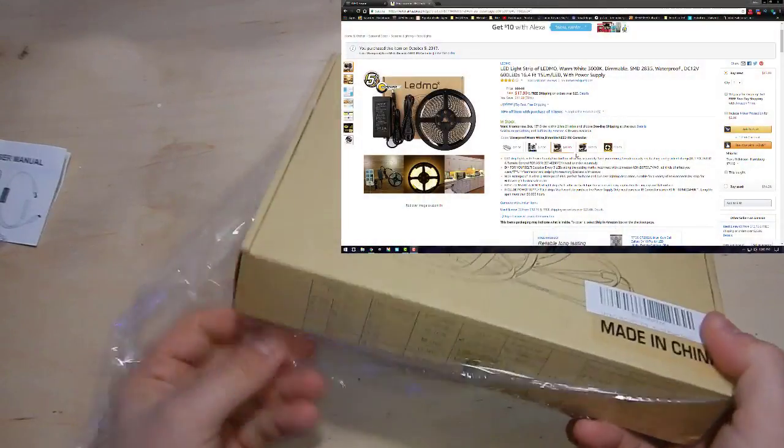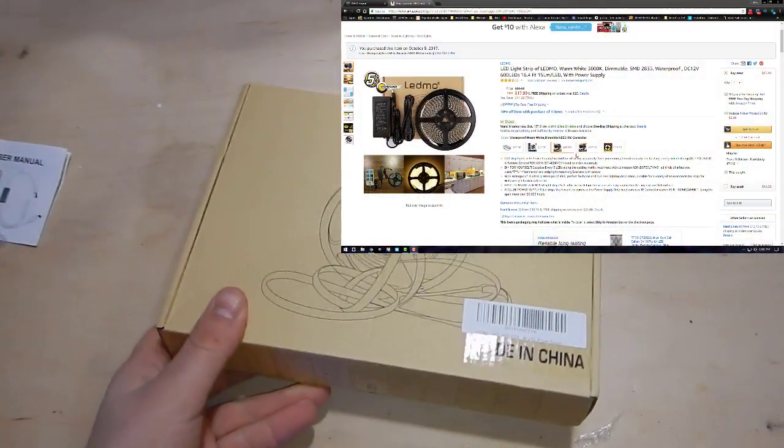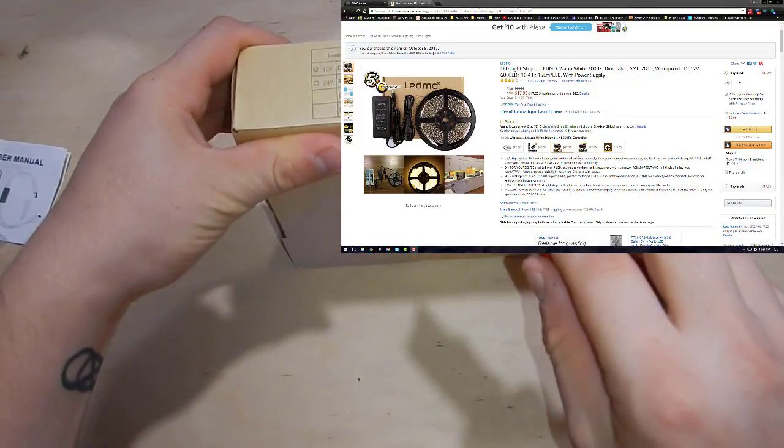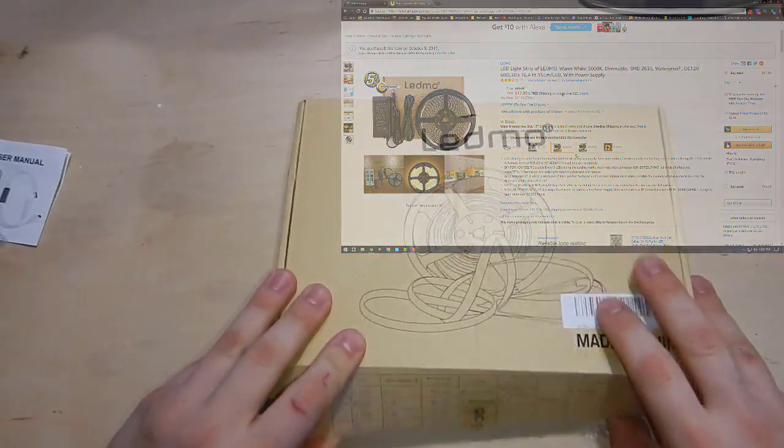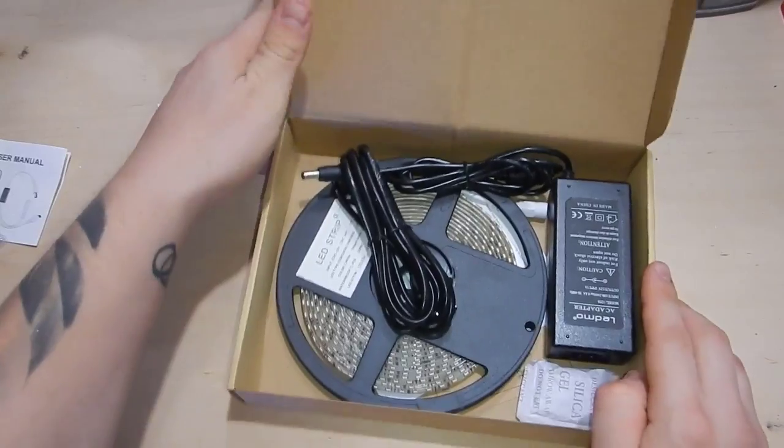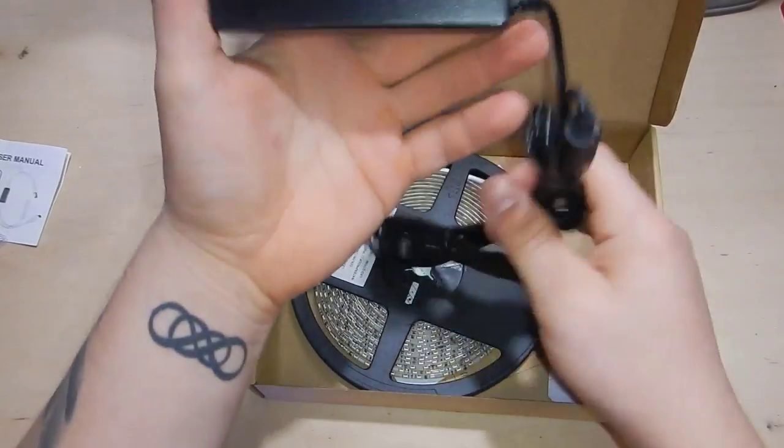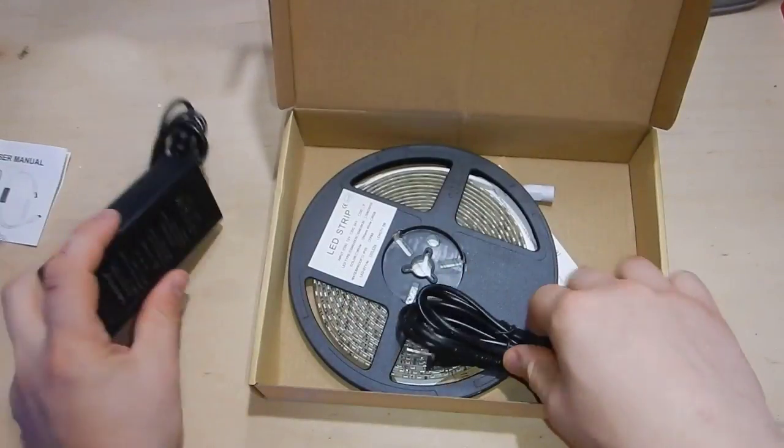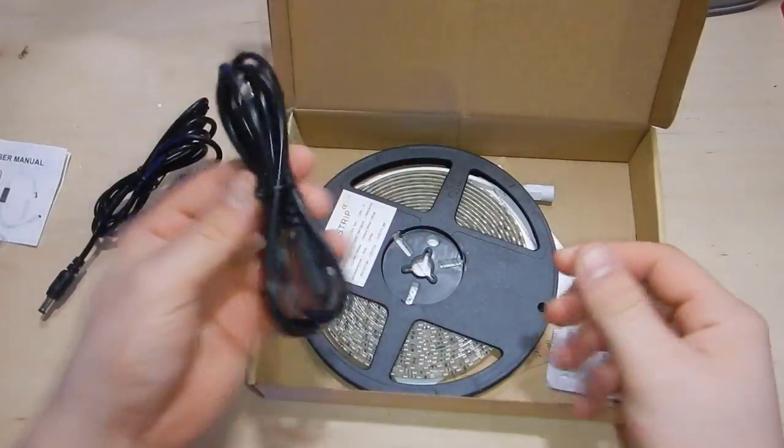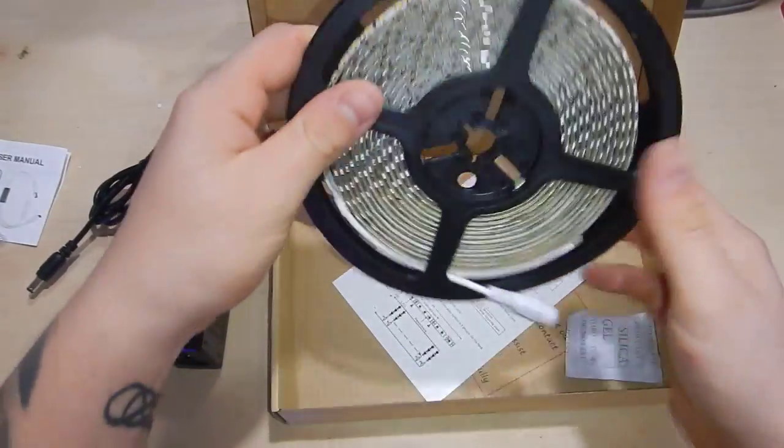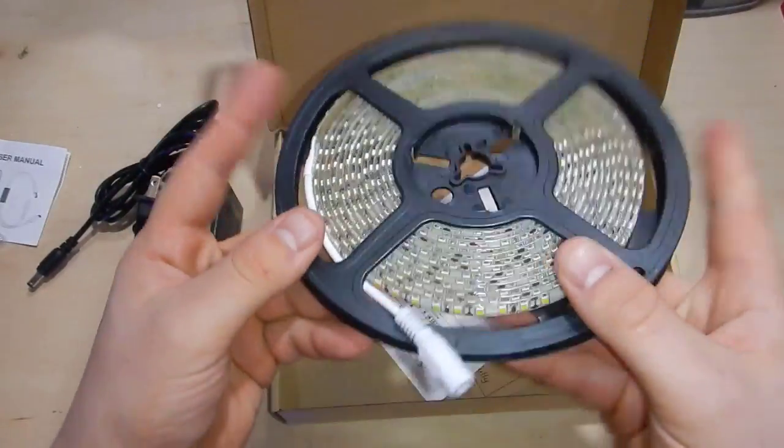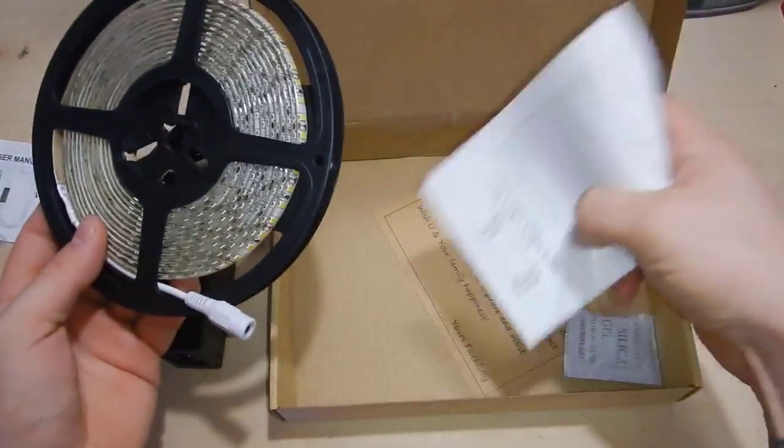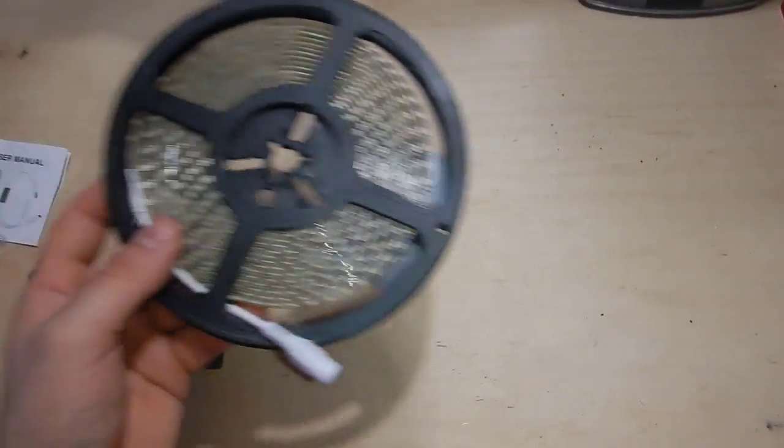I decided to go with warm white 3000K dimmable waterproof LEDs that are about 16 and a half feet long and it comes with a power supply. I did also purchase the remote because as I mentioned previously it's not going to be hooked up to the apex right now. The remote just makes it easier than having to go back there and plug and unplug things every day.